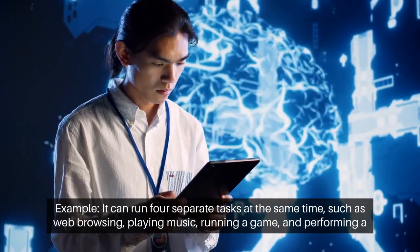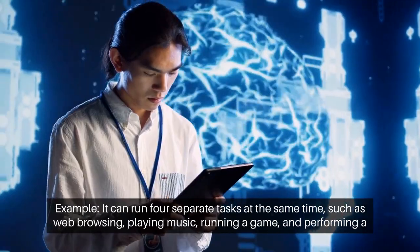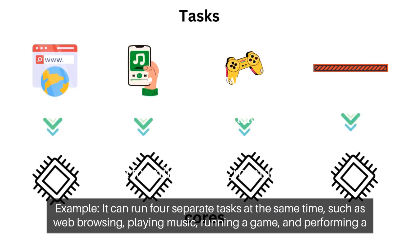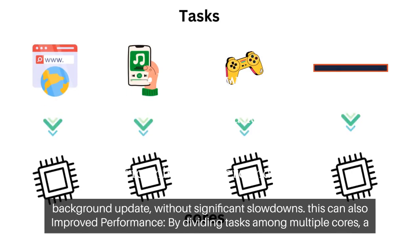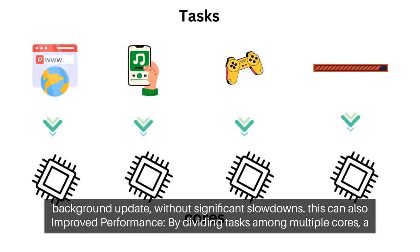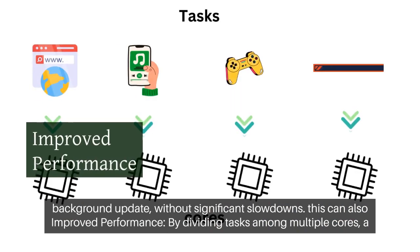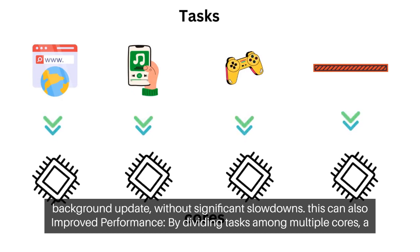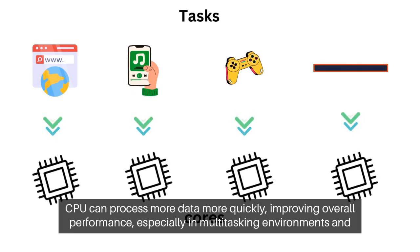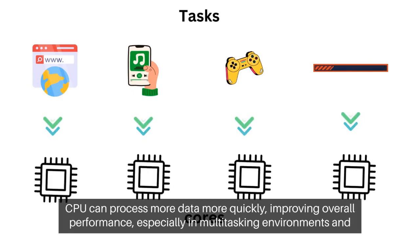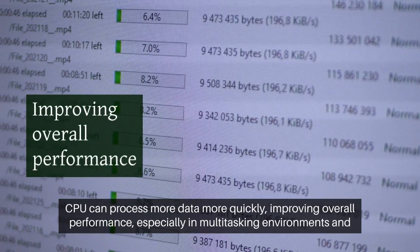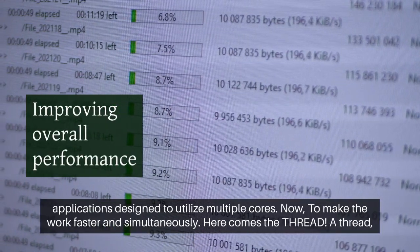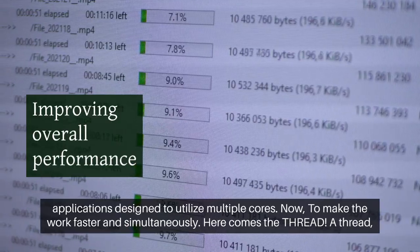For example, it can run four separate tasks at the same time, such as web browsing, playing music, running a game, and performing a background update without significant slowdowns. This can also improve performance. By dividing tasks among multiple cores, a CPU can process more data more quickly, improving overall performance, especially in multitasking environments and applications designed to utilize multiple cores.